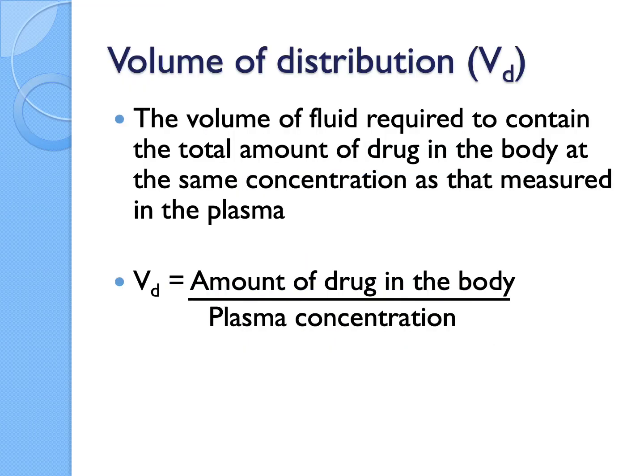The first one we're going to talk about is volume of distribution (VD). The definition of VD sounds a little complicated — it's called the volume of fluid required to contain the total amount of drug in the body at the same concentration as measured in the plasma.